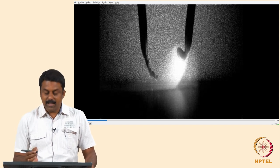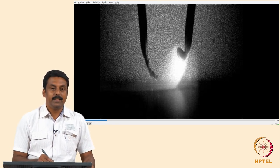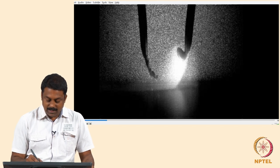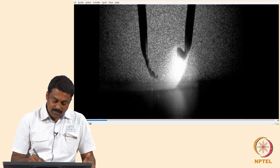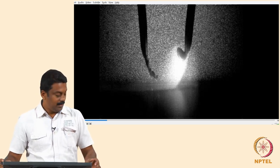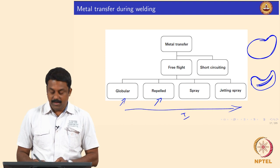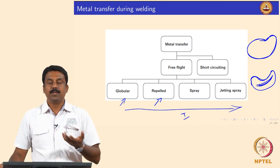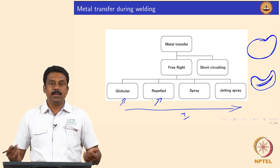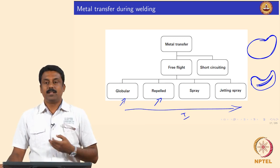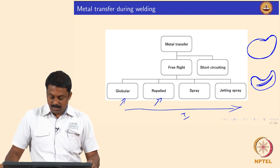In this case the current is there but it is not sufficient to pull the droplet, and because of the increasing current compared to the initial globular transfer, you may also change the shape of the globes into such a shape. If you increase the current further, the globular transfer becomes pre-spray transfer when the Lorentz force supersedes the gravitational forces, and if you keep on increasing it you start melting more and the very high current will produce a jetting spray with much higher spray velocity.